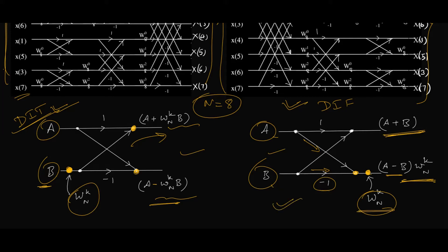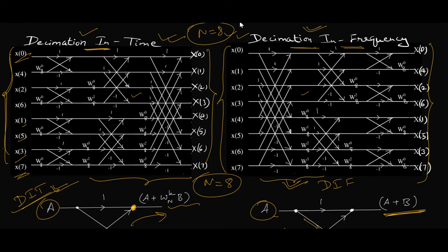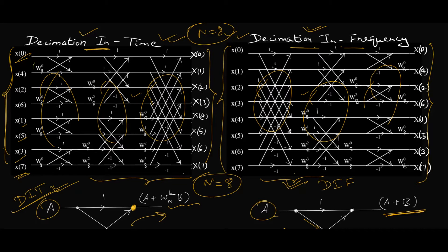Looking at the butterfly structures of DIF and DIT with N equal to 8, there are eight horizontal lines giving an 8-point DFT with eight inputs and eight outputs in both cases. The first notable difference is that the butterfly diagram of DIF is exactly the inverted image of DIT — the third stage of DIT appears as the first stage of DIF, the first stage of DIT appears as the third stage of DIF, and the intermediate second stage remains in place. The second difference is the position of the twiddle factors.